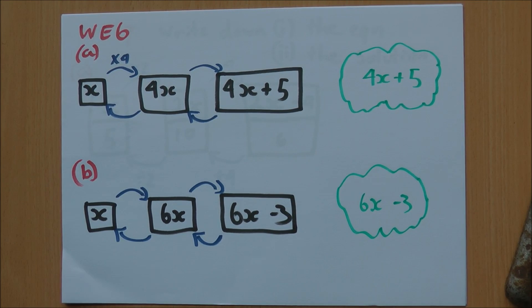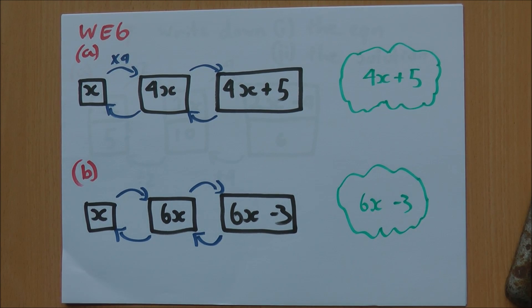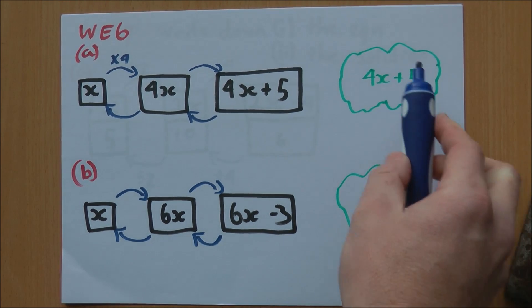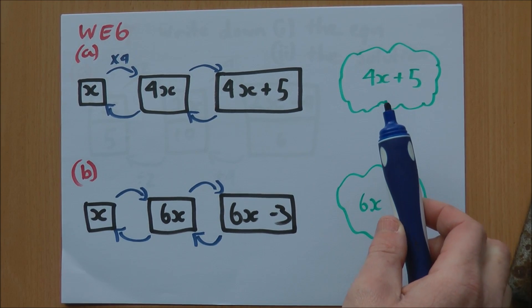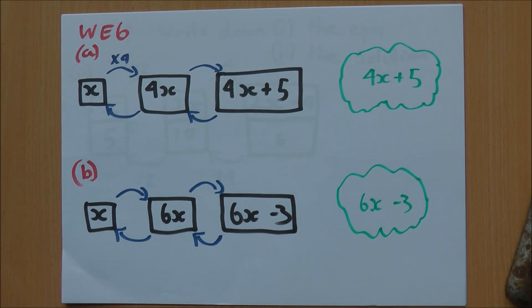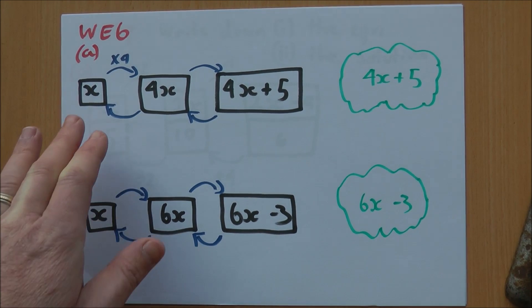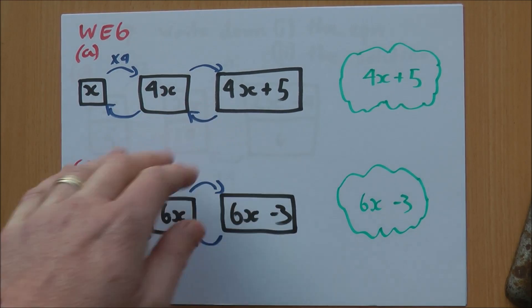Worked example 6, this is on page 387. Copy and complete the following simplified flowcharts to show the order of operations needed to build and undo the expression. Our expression is 4x plus 5, and we represent it with these boxes, which is this flowchart.